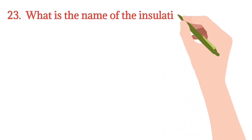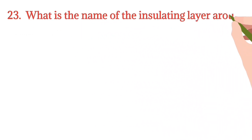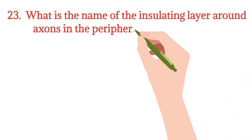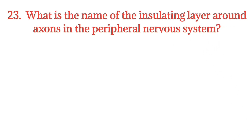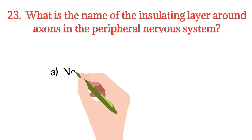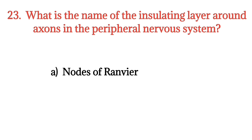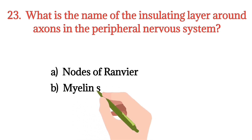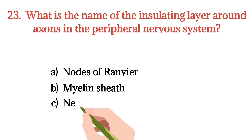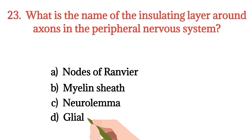MCQ number 23. What is the name of the insulating layer around the axon in the peripheral nervous system? Option A: Nodes of Ranvier. Option B: Myelin sheath. Option C: Neurolemma. Option D: Glial sheath. The right option is Option B.